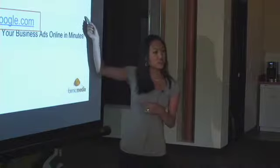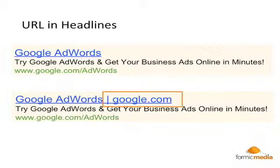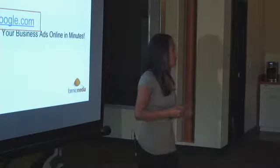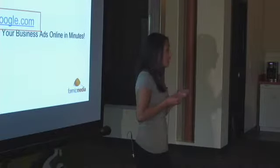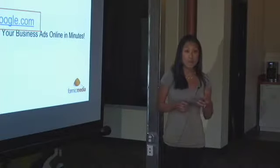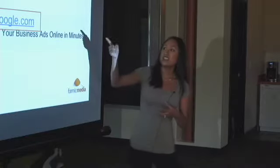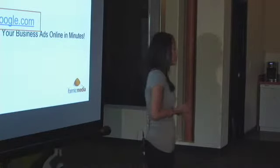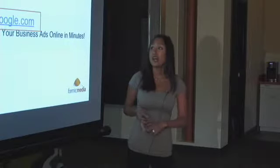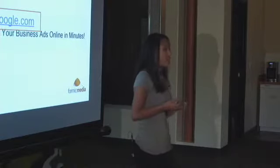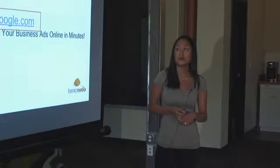A standard text ad is usually what an ad looks like when it's in the top box above the organic search results. This pipe and URL is what's tacked onto the headline. It gives users a quicker, more impactful glance at what URL they're going to. When you have a couple seconds to capture someone on the search results page as they're scrolling quickly, if you can catch their eye with a trustworthy URL that brings branding awareness, sometimes that URL is the deciding factor in having users click through on that ad.